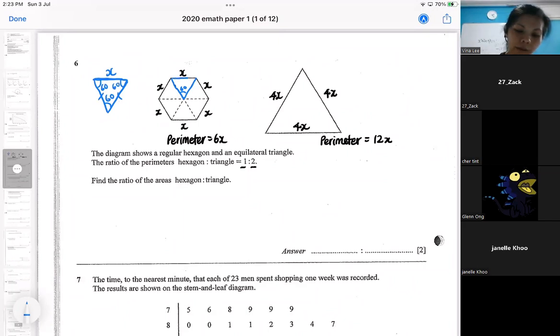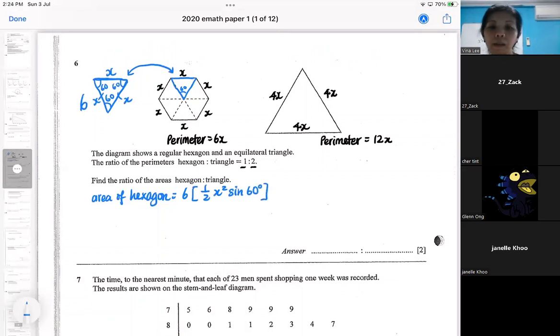So that means, if you look at this, this is one piece of triangle. So how do you get the area of the hexagon? Six triangles. You got six of this. So it's six of half AB sine C, triangle is half AB sine C. So you do that.